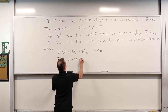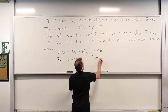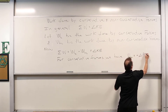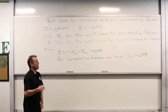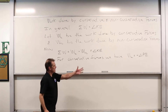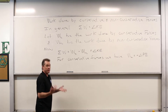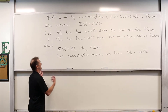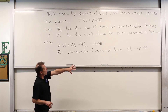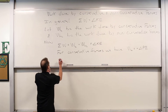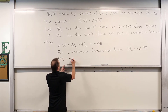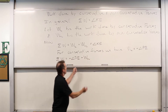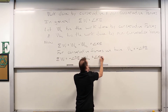For conservative forces, W_C equals negative delta PE. We recast the change in potential energy in terms of the negative of the work done, or vice versa. Any negative work done is really positive change in potential energy — stored energy — and positive work done is a release of that potential energy. So we can replace W_C with negative delta PE. Now we have that the net work equals negative delta PE plus W_NC, and those two add together to produce the overall change in kinetic energy.